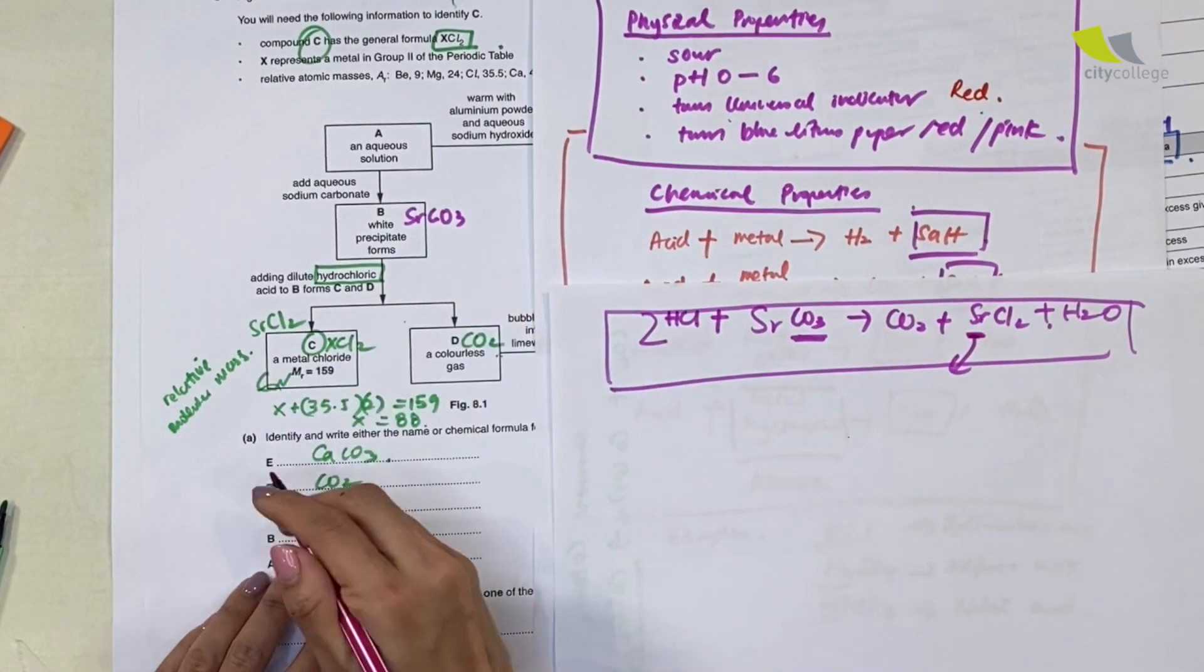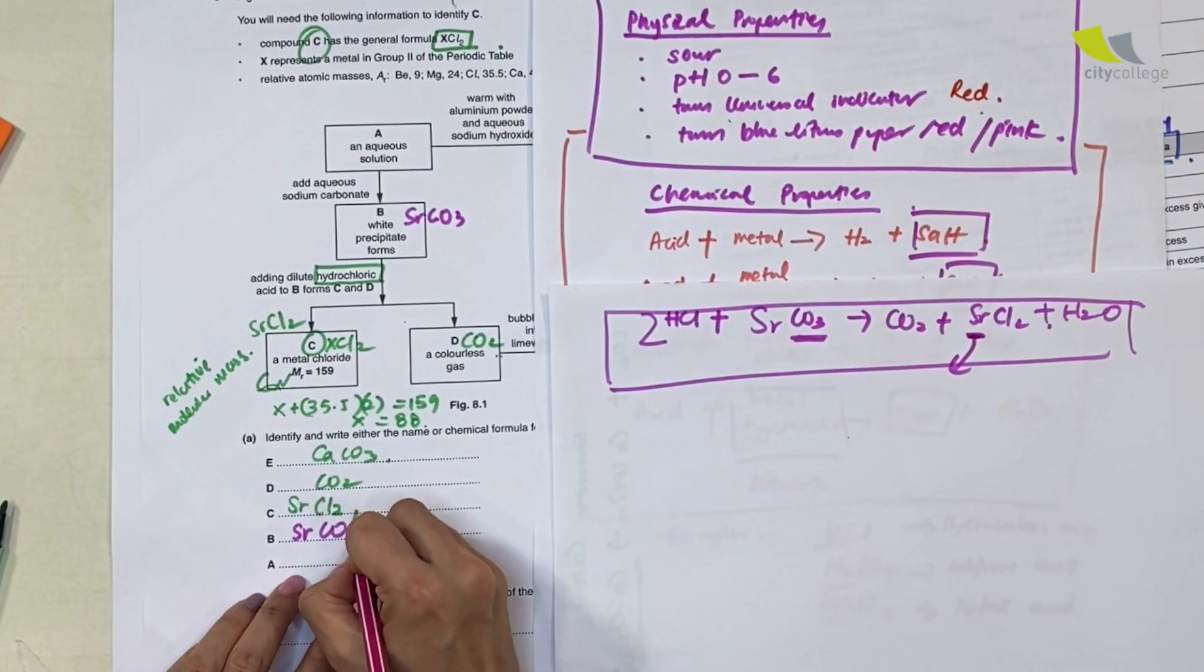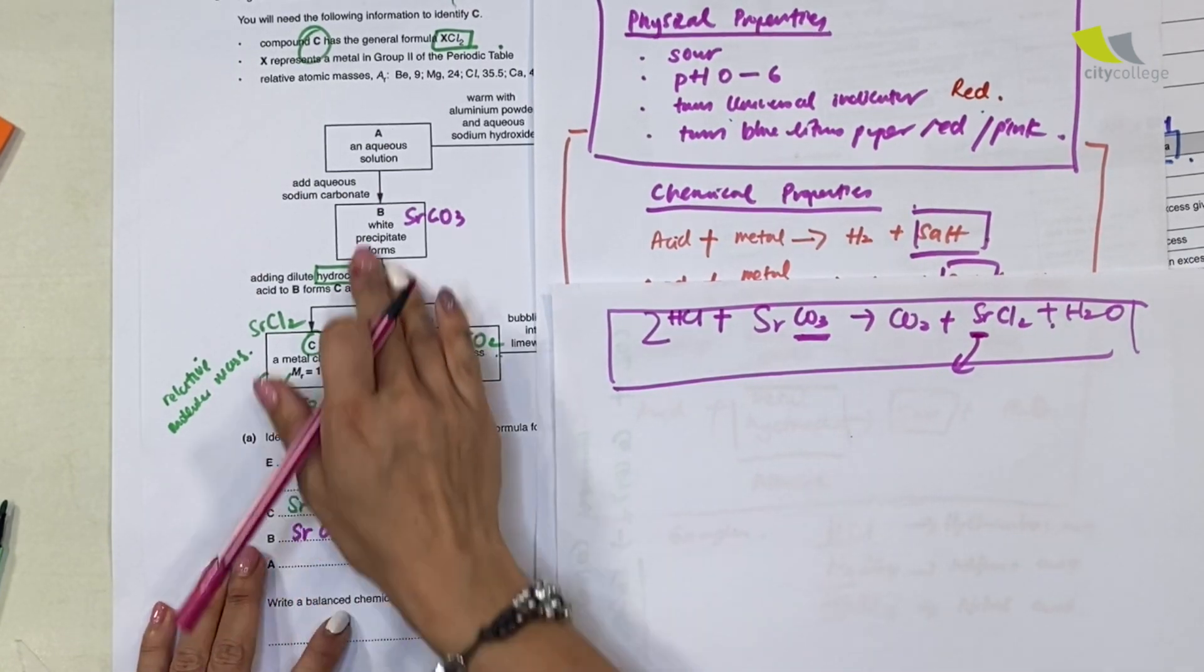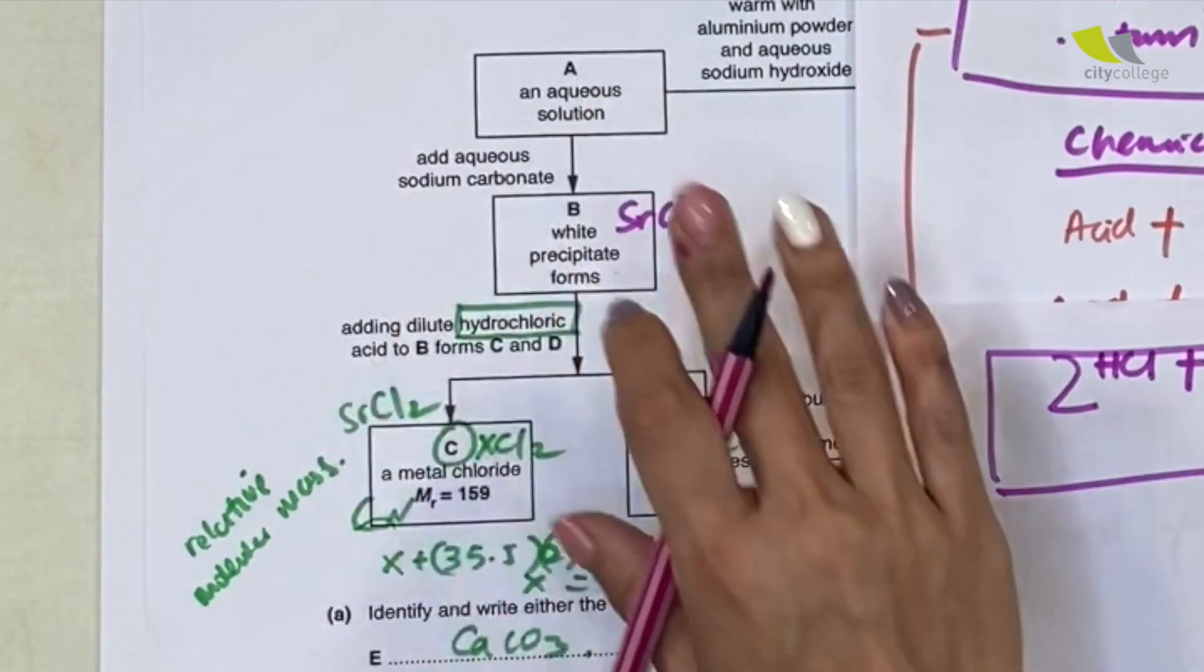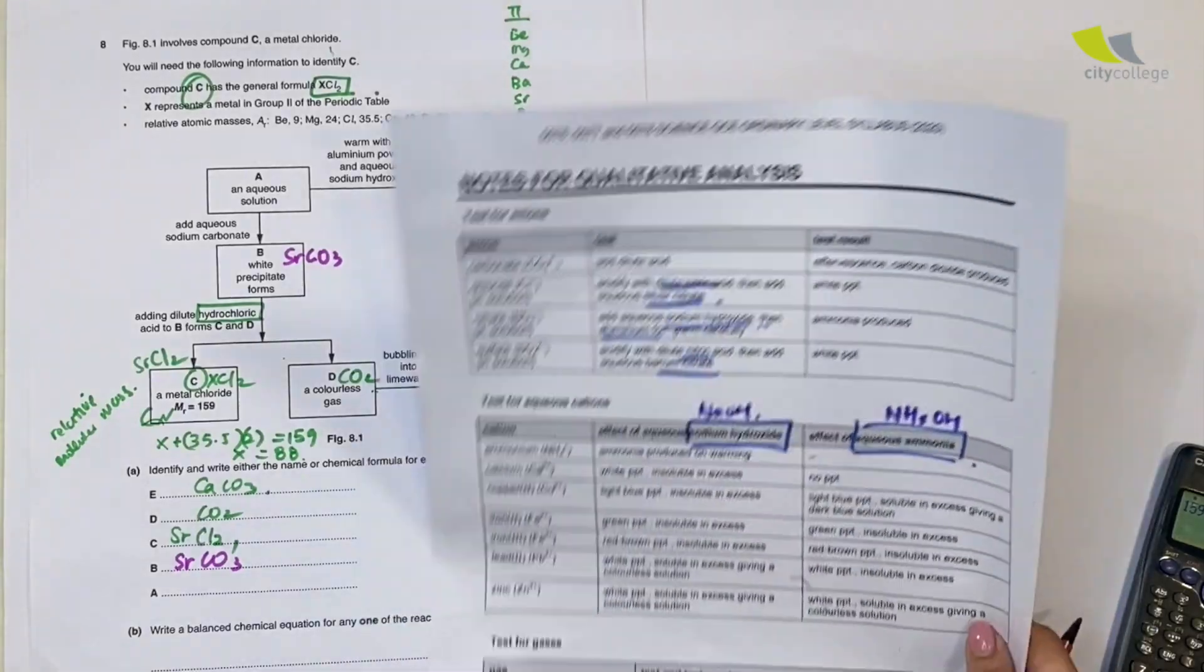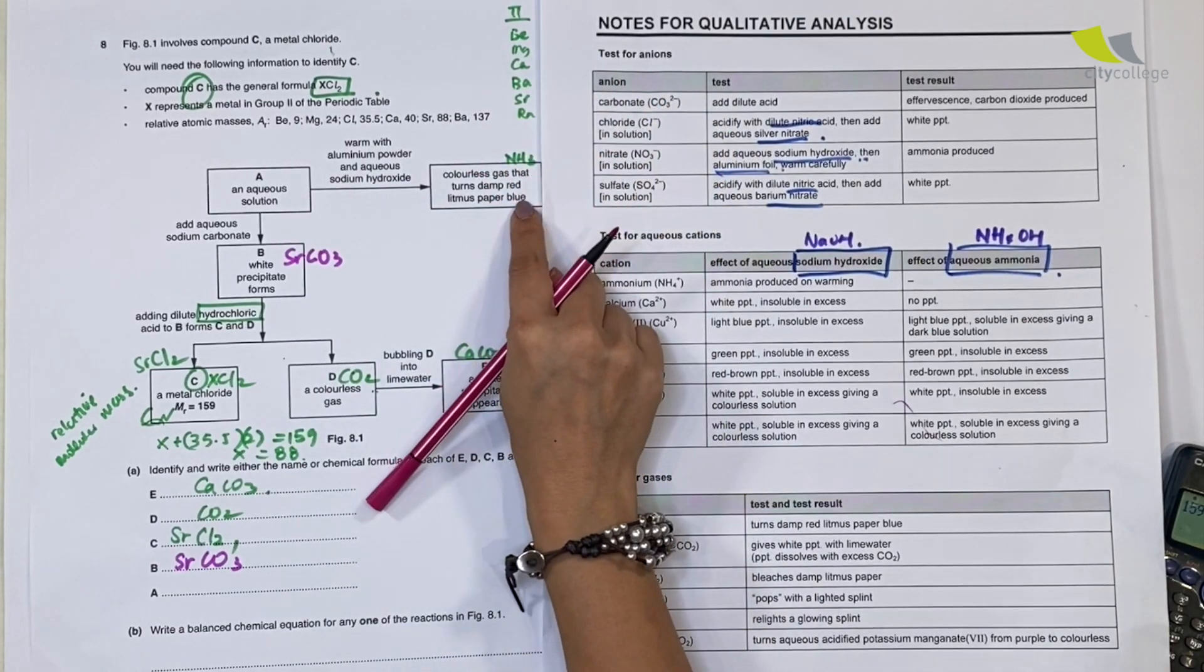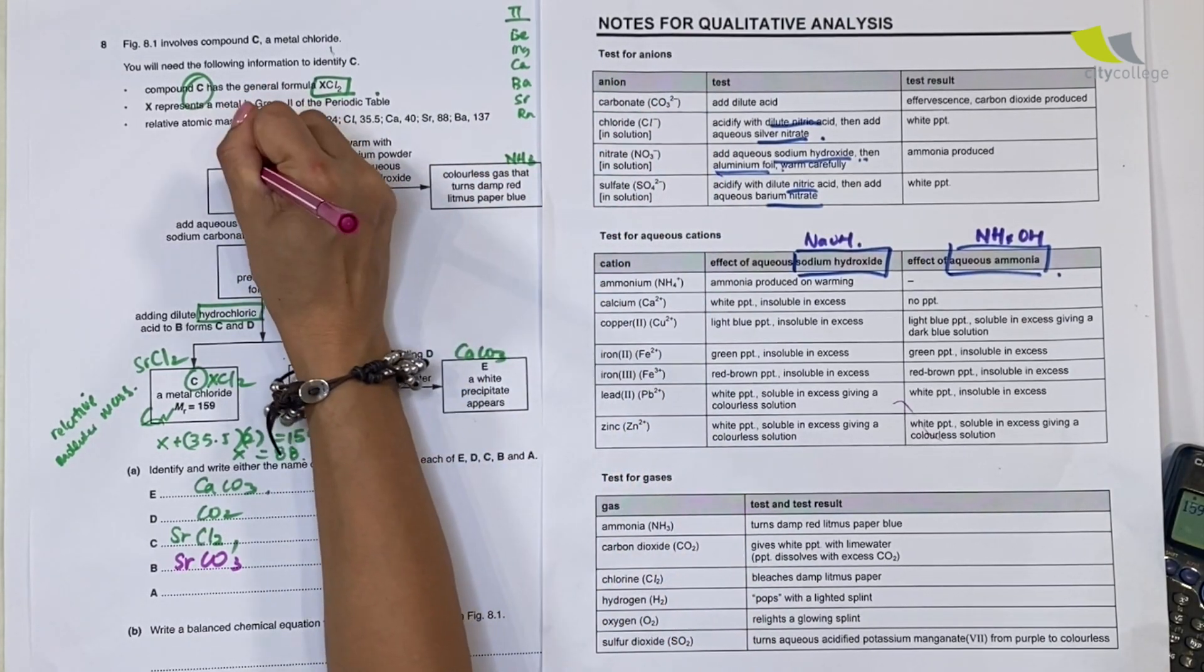Of course, the equation is not balanced. I just need to make sure that I fill out the necessary parts. Because this is Cl2, I put another 2 here. I've balanced this equation.